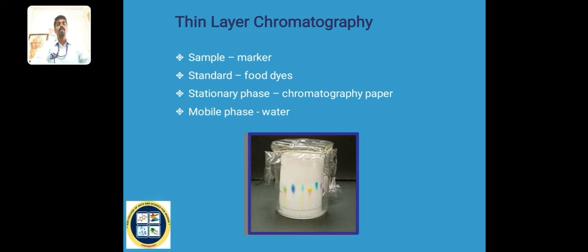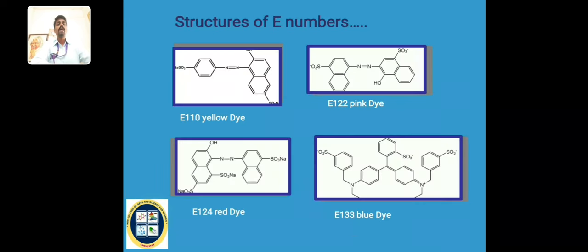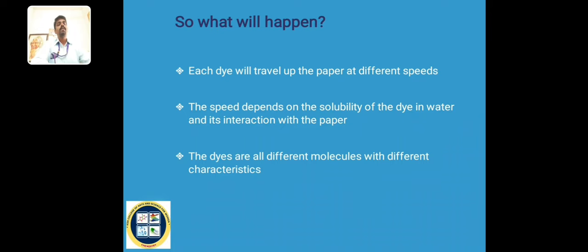There are many dyes: yellow dye, pink dye, red dye, and blue dye as major components. Sometimes we prepare a mixture of these dyes and have to separate each one — especially yellow, pink, red, and blue — through chromatography. Paper chromatography and thin layer chromatography work on almost the same principle.